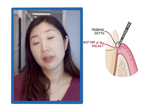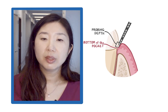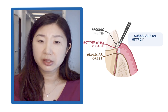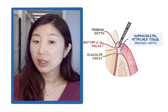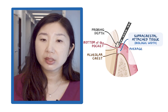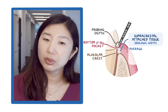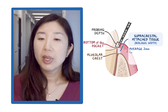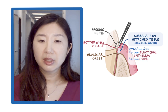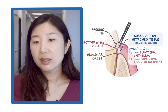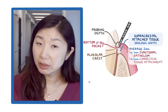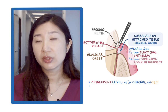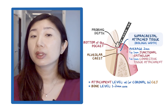The distance between the bottom of the pocket and the alveolar crest is called supracrestal attached tissue, previously called biologic width. The average distance of supracrestal attached tissue — although it varies depending on the location of the tooth in the alveolus — is about 2 millimeters: about 1 millimeter of junctional epithelium and 1 millimeter of connective tissue attachment. This distance is what you don't see on the radiograph. That is why healthy attachment, including soft tissue, is at the CEJ or coronal to the CEJ, whereas the bone level is expected 1 to 2 millimeters away from the CEJ.